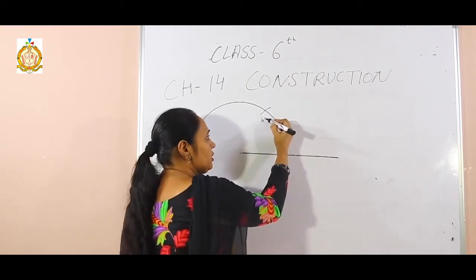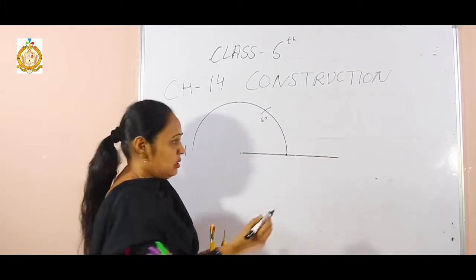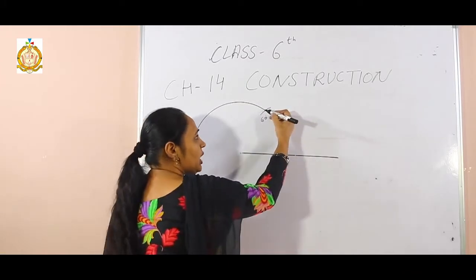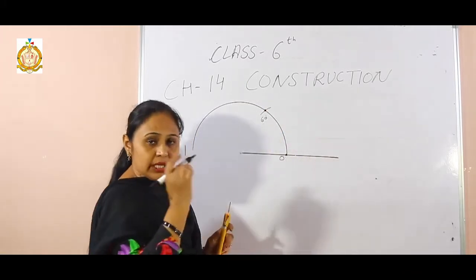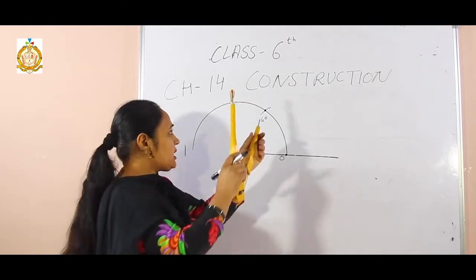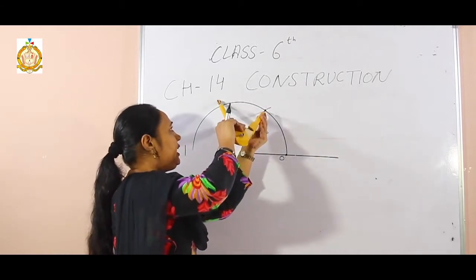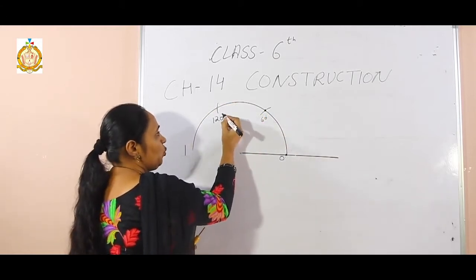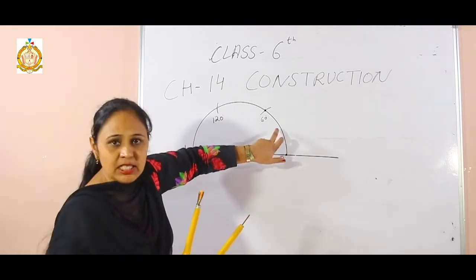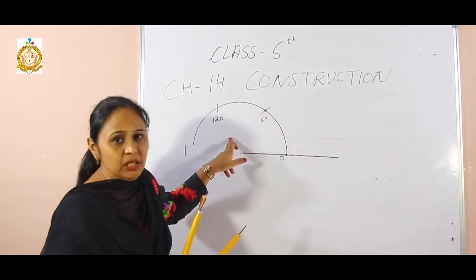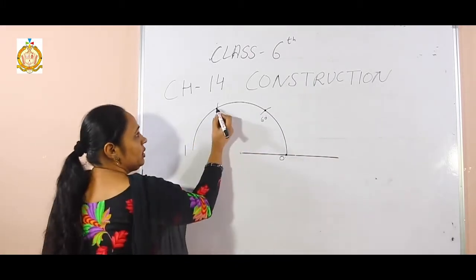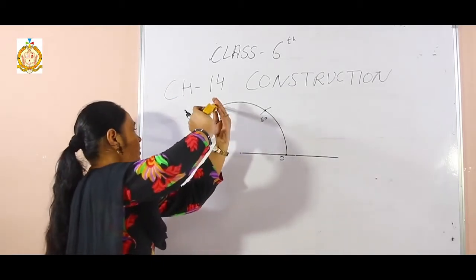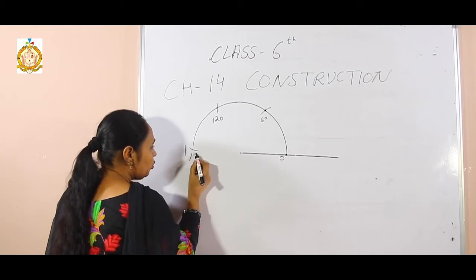This first arc means the angle of 60 degrees — there is 0, and the first arc is at 60. From where the arc cuts the semicircle, again a point is there. From that cutting point, I keep my compass and draw another arc — this becomes 120 degrees. From 120, if I draw another arc on the semicircle, it becomes 180 degrees.